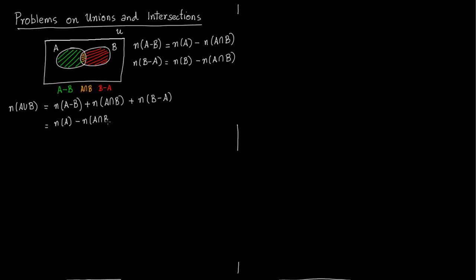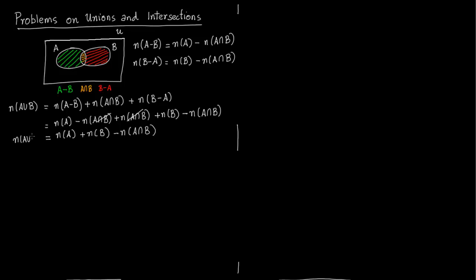Now I am just plugging in: number of A minus B is n(A) minus n(A∩B), then n(A∩B), and instead of B minus A I'm plugging in n(B) minus n(A∩B). These two terms cancel out, and this is what we get: number of elements in A union B equals number of elements in A plus number of elements in B minus number of elements in both A and B. This formula is very important — I will put it in a yellow box with a star.